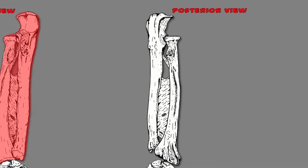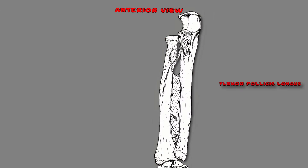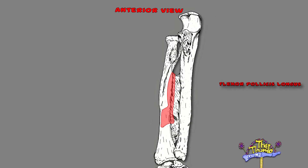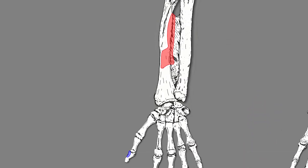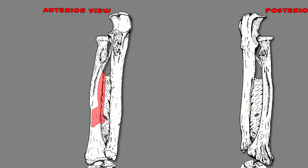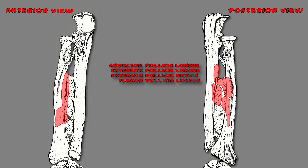Now let's go over to the anterior view of the radius and ulna bone. The flexor pollicis longus muscle originates on the middle anterior shaft of the radius and the interosseous membrane. It's a longus muscle and a pollicis muscle, so we know it inserts on the first digit on the distal phalange. One thing to note: all these pollicis muscles seem to originate on and around the interosseous membrane.